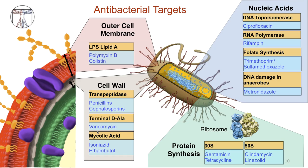This slide is a visual representation of the primary sites of activity for the major classes or subclasses of antibacterial agents. Generally speaking, there are four categories of bacterial targets: cell wall, outer cell membrane, nucleic acids, and ribosomes. These are selected as targets for antibiotics because they are generally unique to bacterial cell components rather than human cells. We will keep coming back to this slide as we discuss the different antibiotic classes in other videos.